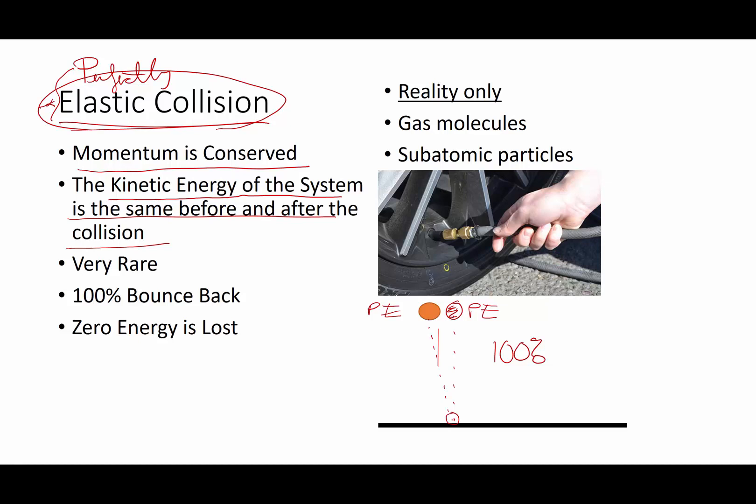How common is perfection in the world? Well, the answer is not very. And so elastic collisions are very, very rare. In reality, where do you see them? Well, the things that come closest are gas molecules when they bounce off of a surface or in the realm of subatomic particles colliding.